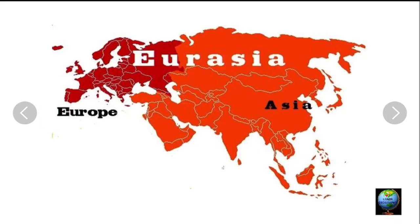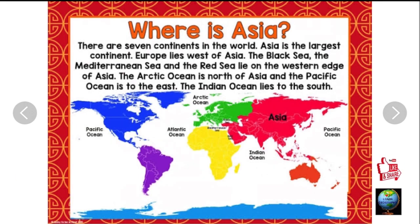The continents of Europe and Asia together form the landmass of Eurasia. Asia is bordered by oceans on three sides: to its north, the Arctic Ocean is located; to its south, the Indian Ocean is located; its eastern coast is bounded by the Pacific Ocean; and the western coast is separated from Europe by the Ural Mountains.